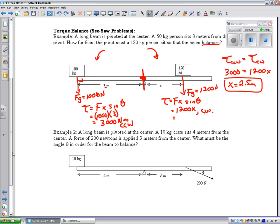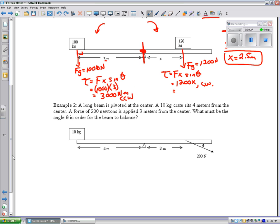Next problem, we put a 10 kilogram mass at the end of a beam, and we have a 200 Newton force on the other side, and we want to find the angle to make it balance. So, again, here's my pivot point. I'm going to measure all my distances from there. Now, I have a force down here of 100 Newtons, and I can find my torque on this side.